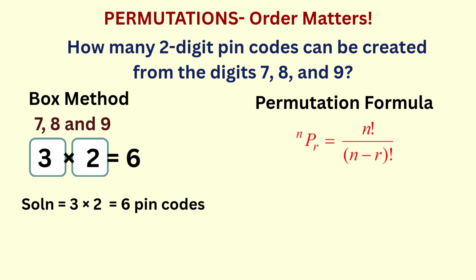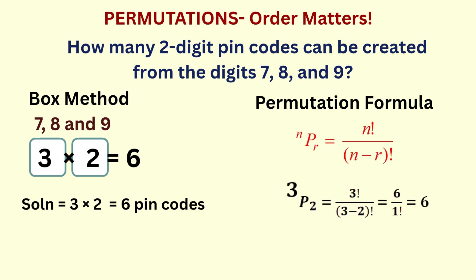This gives rise to the permutation formula for selecting r items from a total of n items when the order of the selected items is important. Replacing n with 3 and r with 2, nPr becomes 3P2. That's 3 factorial over 1 factorial, which is 6 — the same amount Beth got when she listed them.